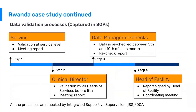Here we see the steps of the data validation process as defined in the Rwandan standard operating procedures. The first step is at service delivery data at health facility level — the health facilities hold a meeting of their staff to review the data and submit a meeting report where they are actually looking for data quality issues at facility level.